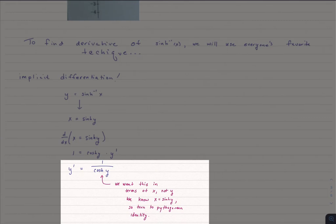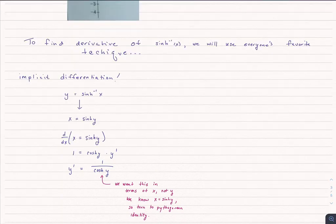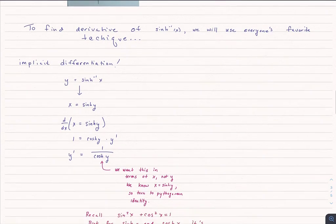So what do we do? We're going to use something very close to the Pythagorean theorem for sine and cosine, but it's slightly different for hyperbolic sine and hyperbolic cosine.